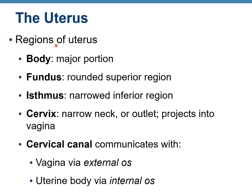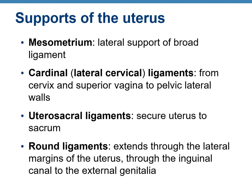The uterus has several regions. The body is the major portion. The fundus is the rounded superior region. The isthmus is the narrowed inferior region. The cervix is the neck or outlet that projects into the vagina, and the cervical canal communicates with the vagina and uterine body through external and internal os. Supporting ligaments include the cardinal ligament, uterosacral ligament, and round ligament.